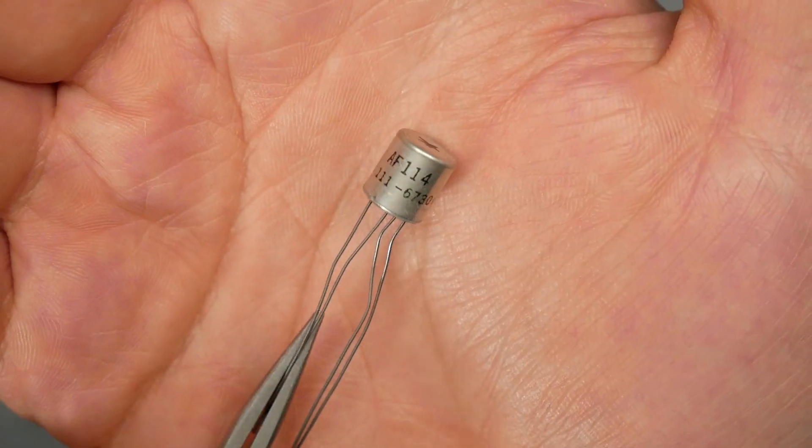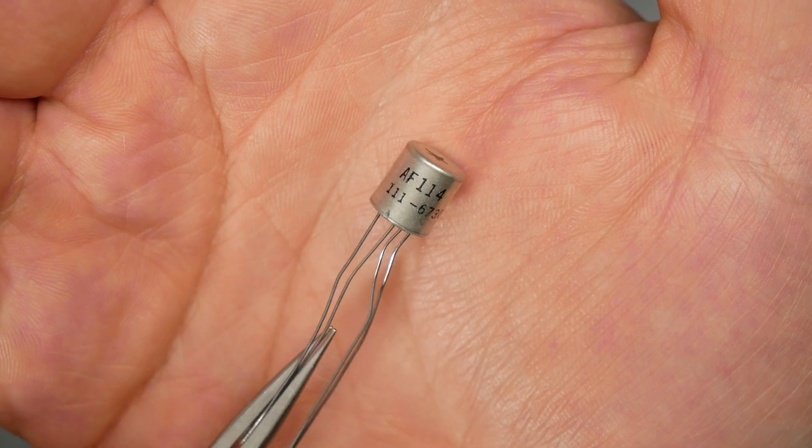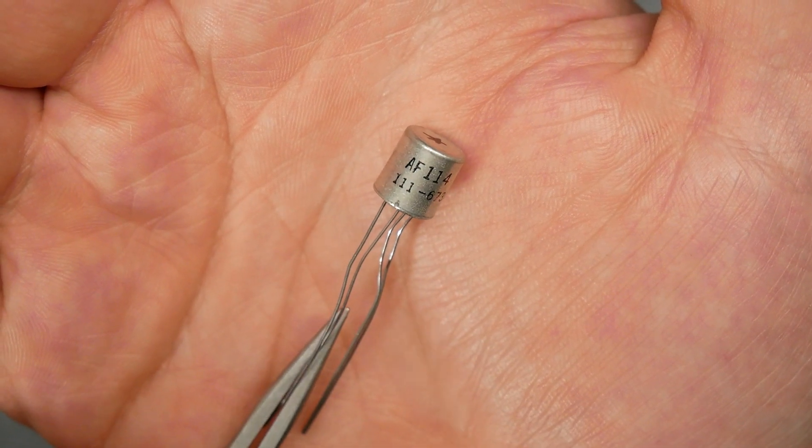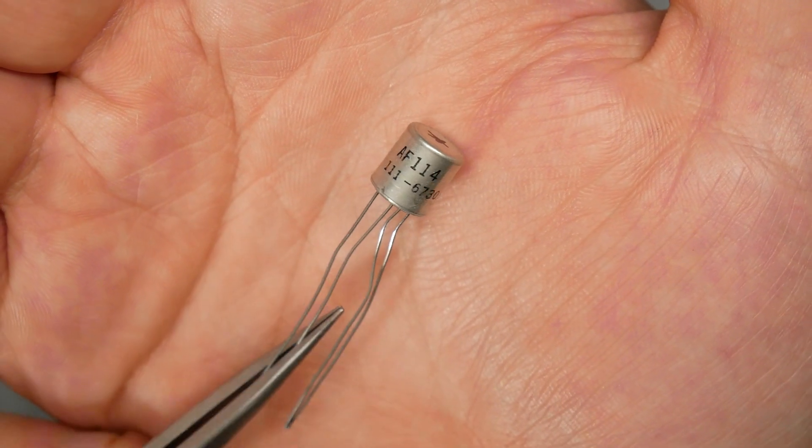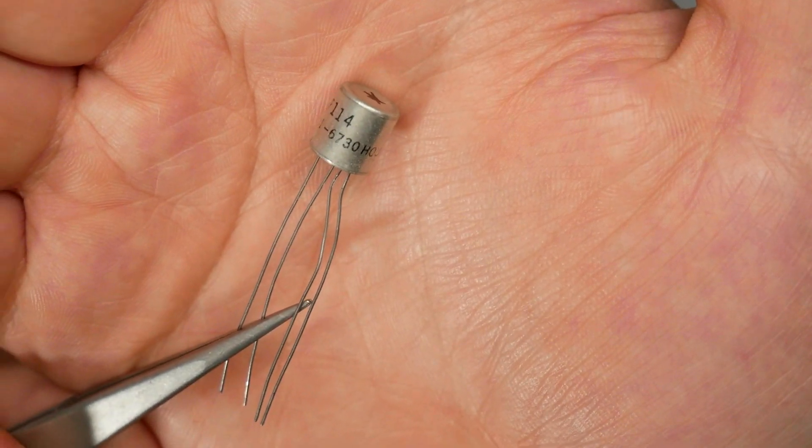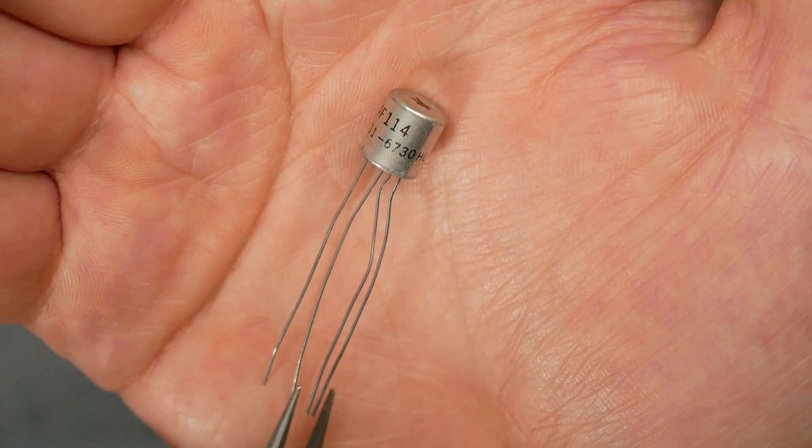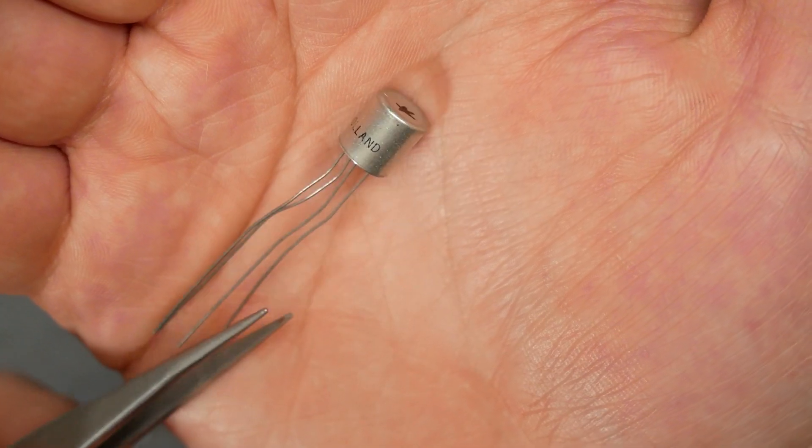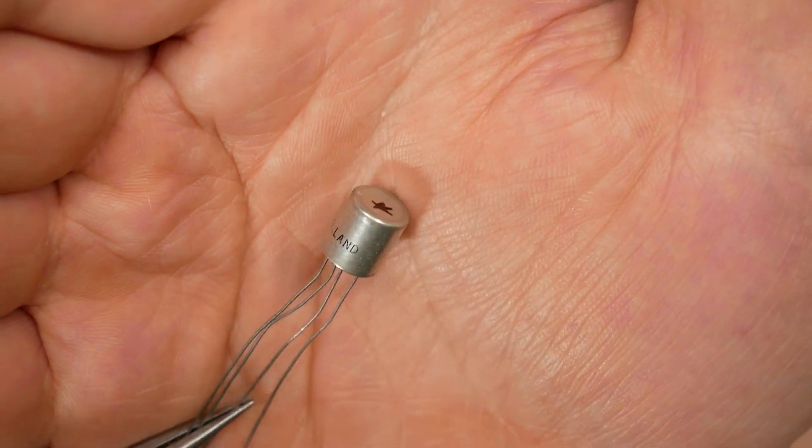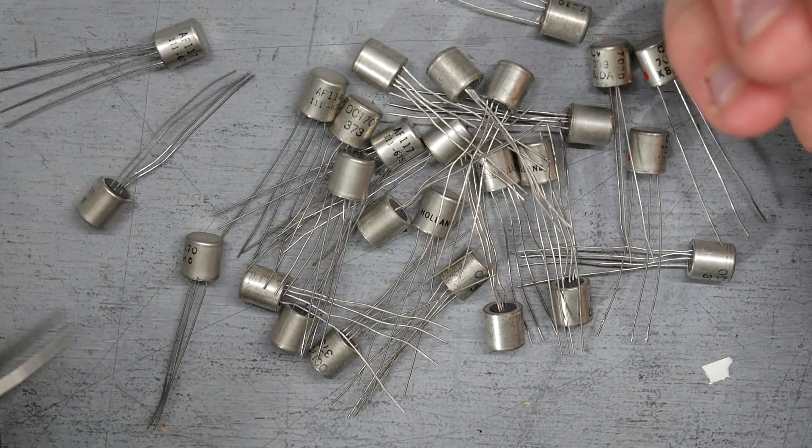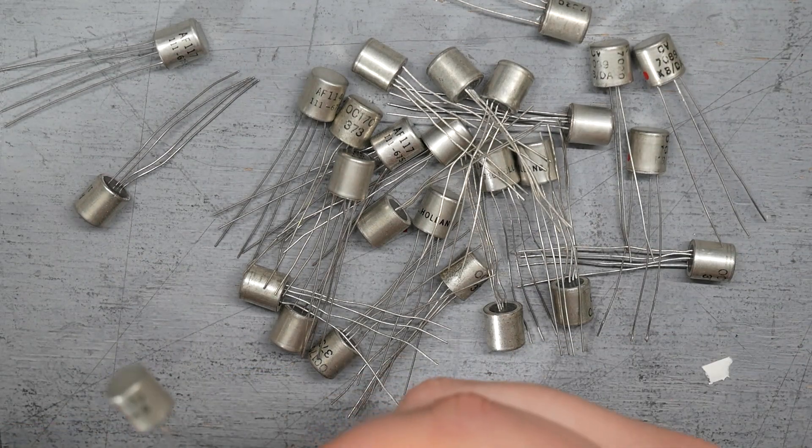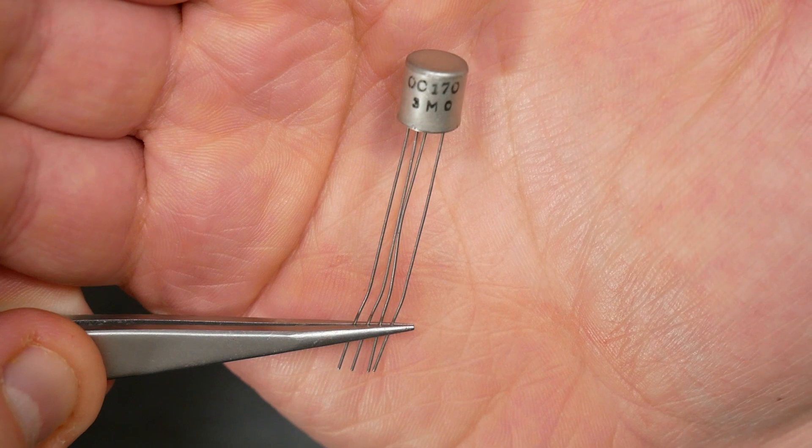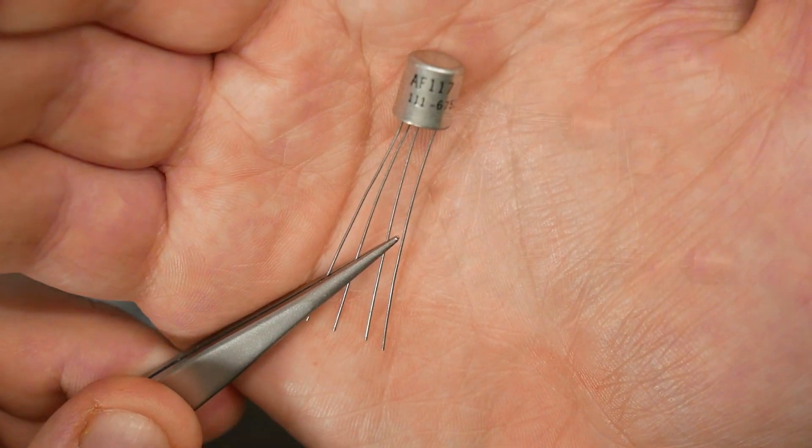I wanted to give you a look. So this is an AF114 and 111 is an EIA code that is Amperex, 6730 is the date manufacturer, 1967 30th week. Flip that over you can see there it says Holland. We've got some other part numbers here. They're all essentially the same transistor, same series of transistors. This is OC170, here's an AF117, again Amperex.